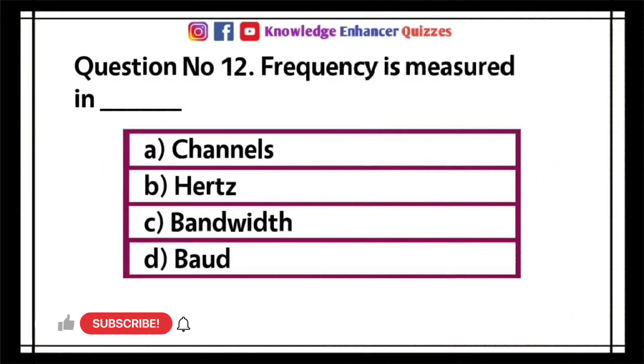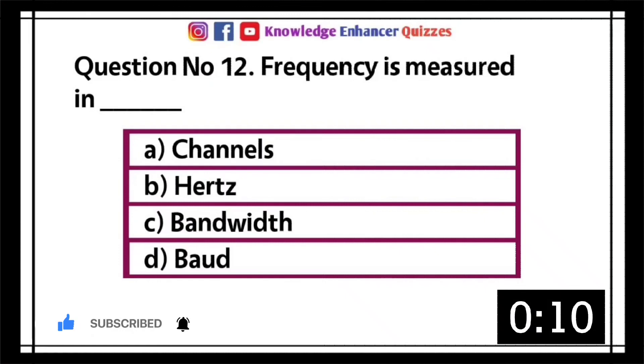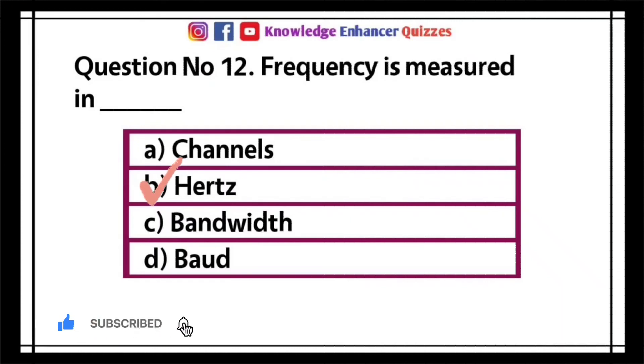Question number 12, frequency is measured in: A, channels; B, hertz; C, bandwidth; D, boo. Option B is the right answer.